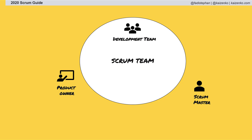Instead, it created an us-versus-them behavior between developers and the product owner. The developers felt they were working for the product owner as opposed to collaborating with the product owner. The 2020 Scrum Guide addresses this misunderstanding by dropping the term development team and replacing it with just developers.